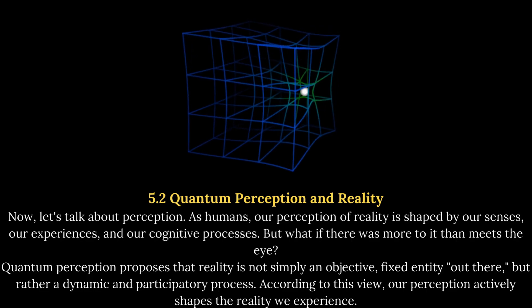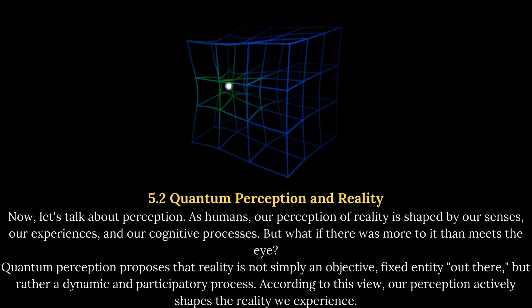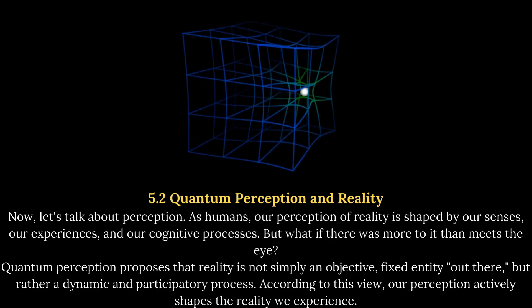But what if there was more to it than meets the eye? Quantum perception proposes that reality is not simply an objective, fixed entity out there, but rather a dynamic and participatory process. According to this view, our perception actively shapes the reality we experience.